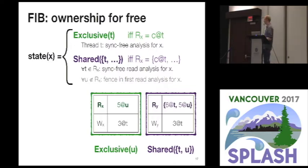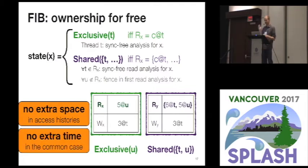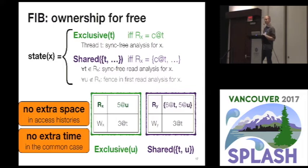I want to call out two key things about the way this protocol is designed. First, there's no extra space required — because we've derived the ownership sense directly from the pre-existing data race detection metadata, we don't have to store ownership as its own piece of information, so no space overhead. Second, there's no extra time required to check ownership in the common case. The common case is a thread-local access in the thread that exclusively owns this location, or a read-shared access in a thread that shares ownership. The checks the data race detector is already doing already check that ownership, so we just get to use that for free.